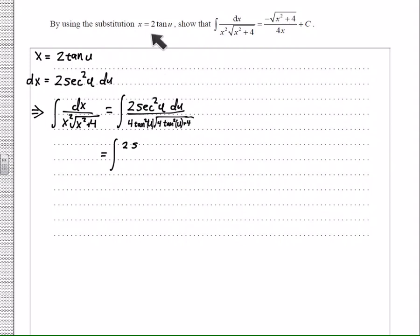Well, isn't that convenient? It was really thoughtful of them to give us that value for x, 2 times the tangent of u. Now we can see all those 4s matching up quite nicely.